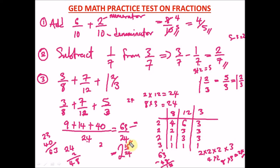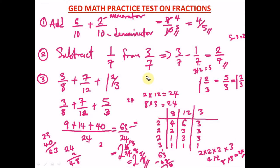We can still simplify 15 over 24. 3 goes into 15 five times, and 3 goes into 24 eight times. So 15 over 24 simplifies to 5 over 8. The final answer is 2 and 5 over 8. Note: when you're just cancelling within the fraction part, you do NOT add 1 to the whole number.